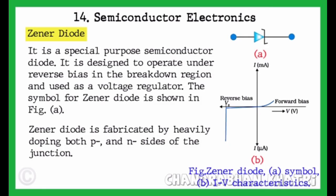Zener Diode. It is a special purpose semiconductor diode. It is designed to operate under reverse bias in the breakdown region and used as a voltage regulator.